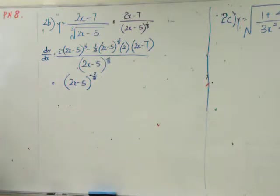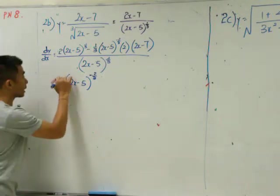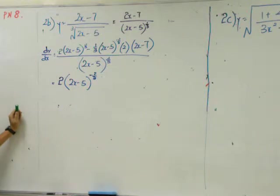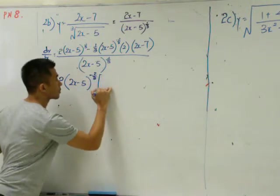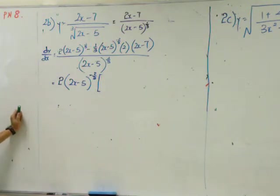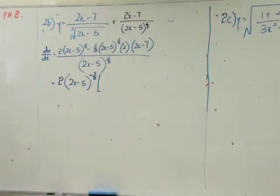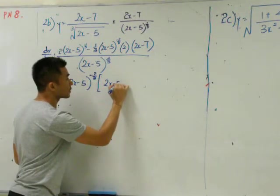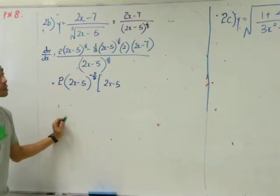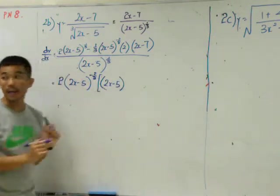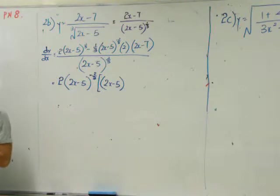Now I need to put whatever I did not take out inside the square bracket. Sing here, what will be inside the square bracket? 2x minus 5. This will be to the power of 1, am I right? We all agree already.